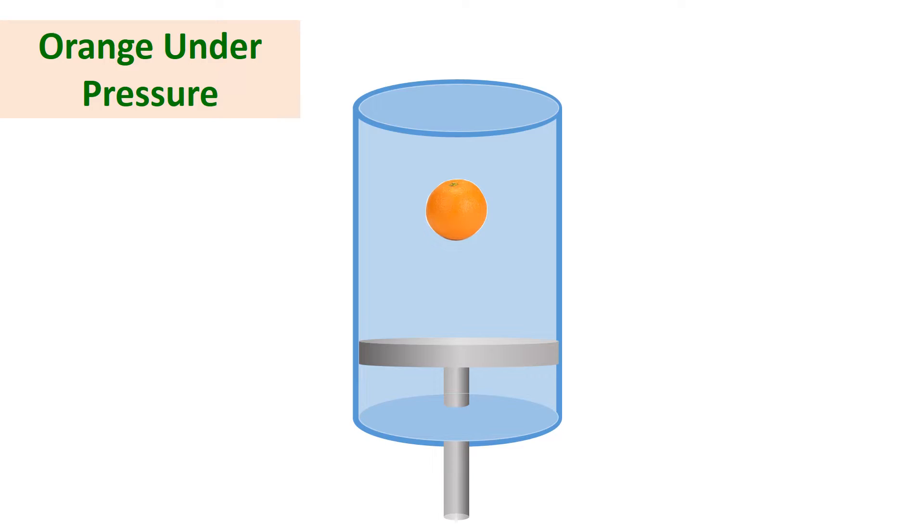First, we can look at an example. We can place an orange in a chamber filled with water, and then we can apply pressure in the chamber with a piston. What would happen?